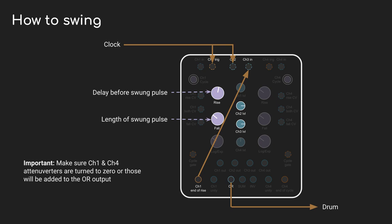I'm going to do this in two parts. First, I'm going to use channel 1 on Maths as a trigger delay. Then I'm going to use the summing bus to add the swung beat and the original one together.